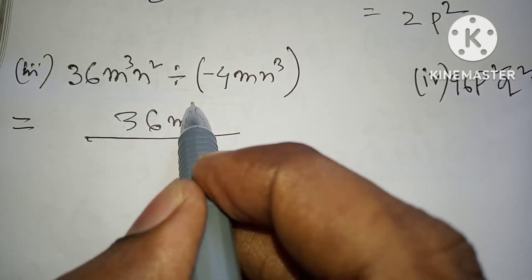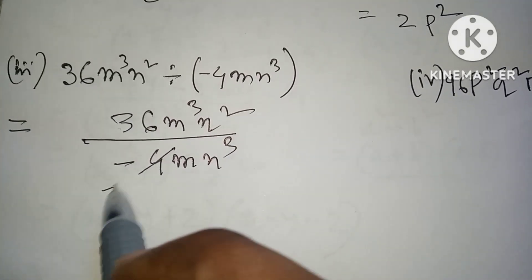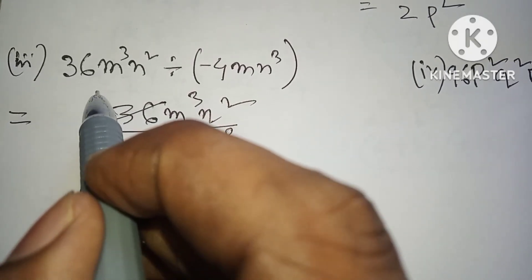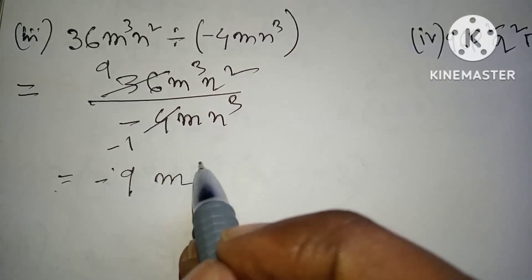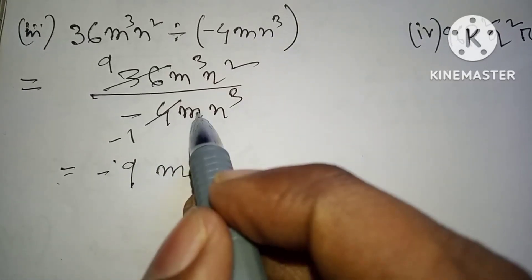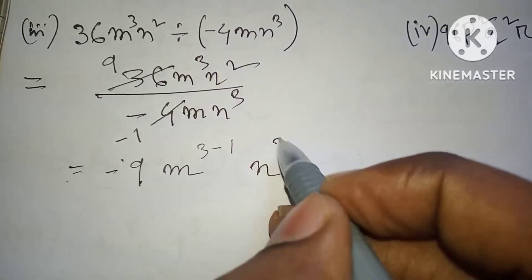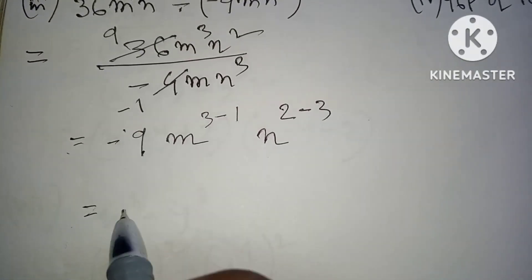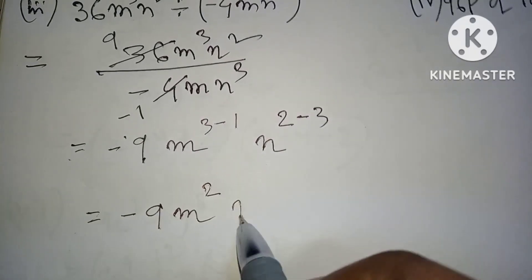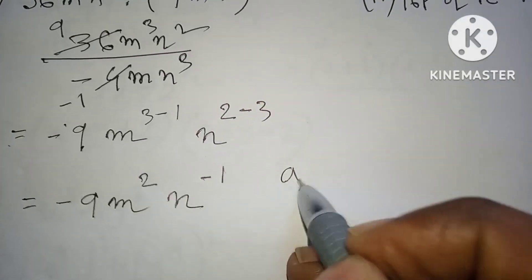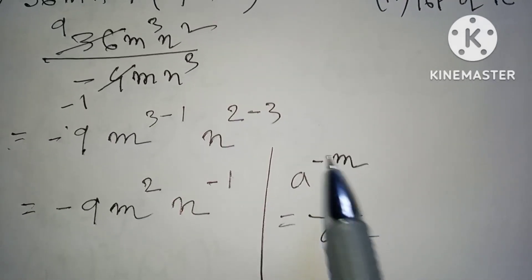36 m cube n square minus 4 m n cube, divide by 4. 36 divided by 4 gives 9. m power 3 minus 1 gives m squared, n power 2 minus 3 gives n to the power minus 1. Result: minus 9 m squared n to the power minus 1.